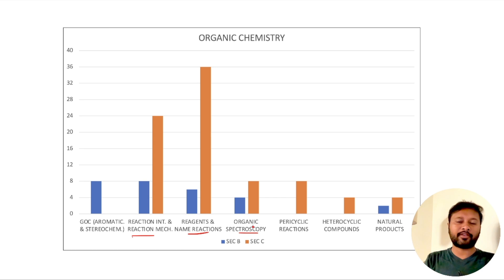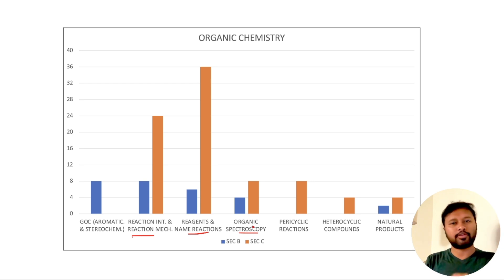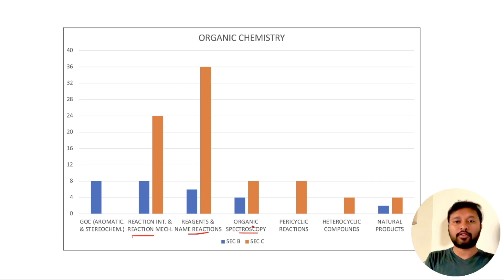To summarize: this video aimed to provide data on which topics have high weightage and which you should not miss, giving you a clear picture of how the CSIR December 2023 question paper was divided. We have also launched our own ebook — topic-wise previous years' questions solved in detail — covering CSIR June 2011 to CSIR December 2023. Questions are segregated topic-wise with detailed solutions. The link is in the description and pinned in the comments. It's available as a PDF for download, print, or digital reading. See you in the next video — bye!